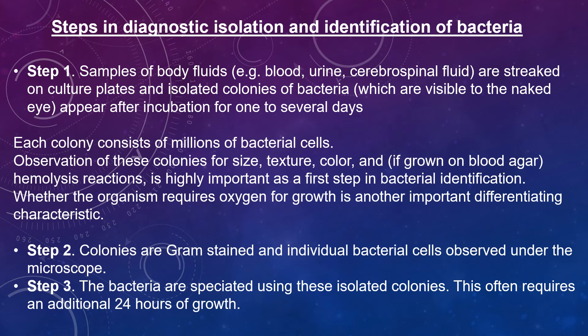Step one: samples of body fluids — blood, urine, cerebrospinal fluid — are plated on culture plates, and isolated colonies of bacteria, visible to the naked eye, appear after incubation for one to several days. The most commonly used plate is blood agar, from which many organisms can grow. Each colony consists of millions of bacterial cells. Observation of colonies for size, texture, color, and if grown on blood agar, hemolysis reactions, is highly important.